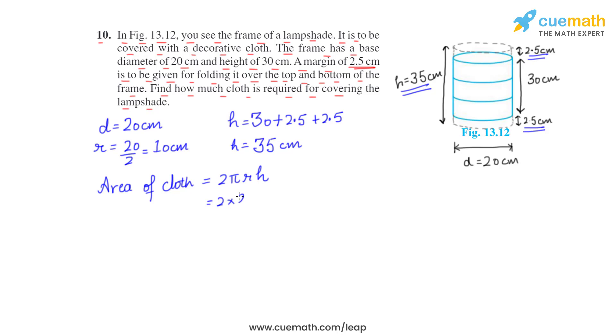So, 2 × 22/7 × radius is 10 × height is 35 in square centimeters. This comes out to be 2200 square centimeters.